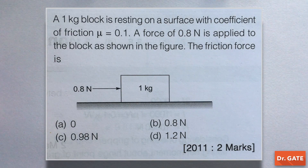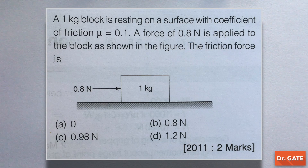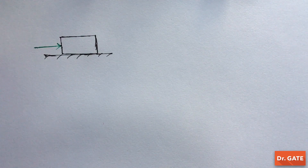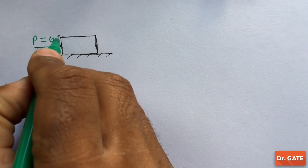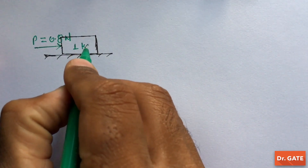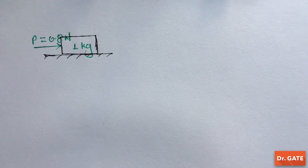A 1 kg block is resting on a surface with a coefficient of friction μ = 0.1. A force of 0.8 N is applied to the block as shown in the figure. We have to find the friction force. This type of situation is given: external pushing force P is 0.8 N, weight of the block is 1 kg, and we have to find the frictional resistance at the surface.